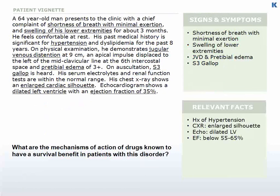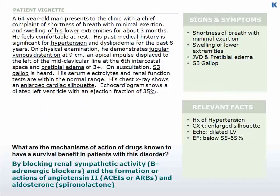Returning to our vignette: the drugs known to have a survival benefit in patients with CHF act by blocking renal sympathetic activity, as seen with beta blockers, blocking the formation or actions of angiotensin-2, as seen with ACE inhibitors and ARBs, and blocking the action of aldosterone, as seen with spironolactone, an aldosterone receptor antagonist.